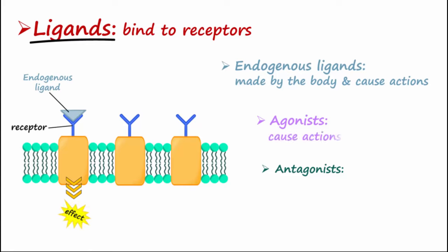Agonist drugs also cause an effect or action and act like endogenous ligands, but they are administered to the patient.